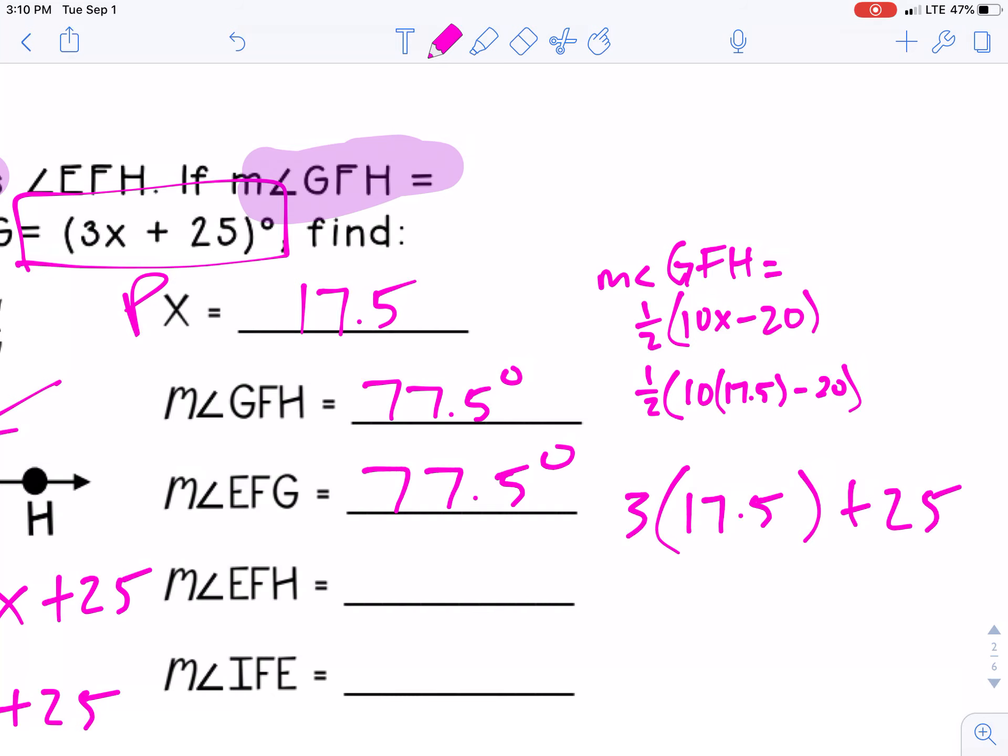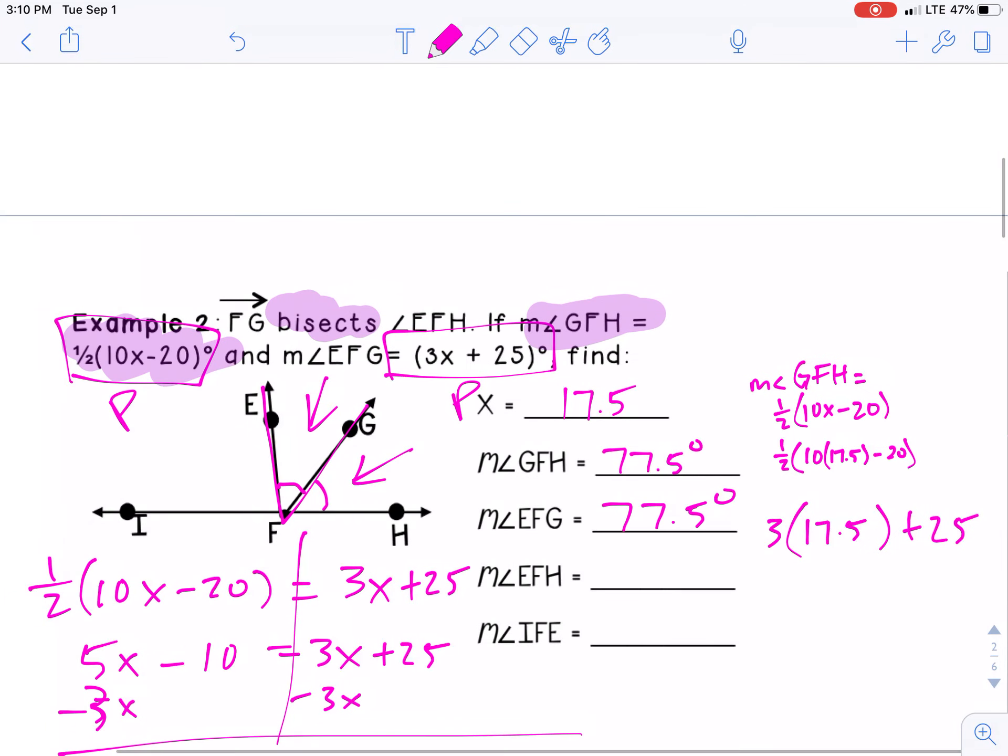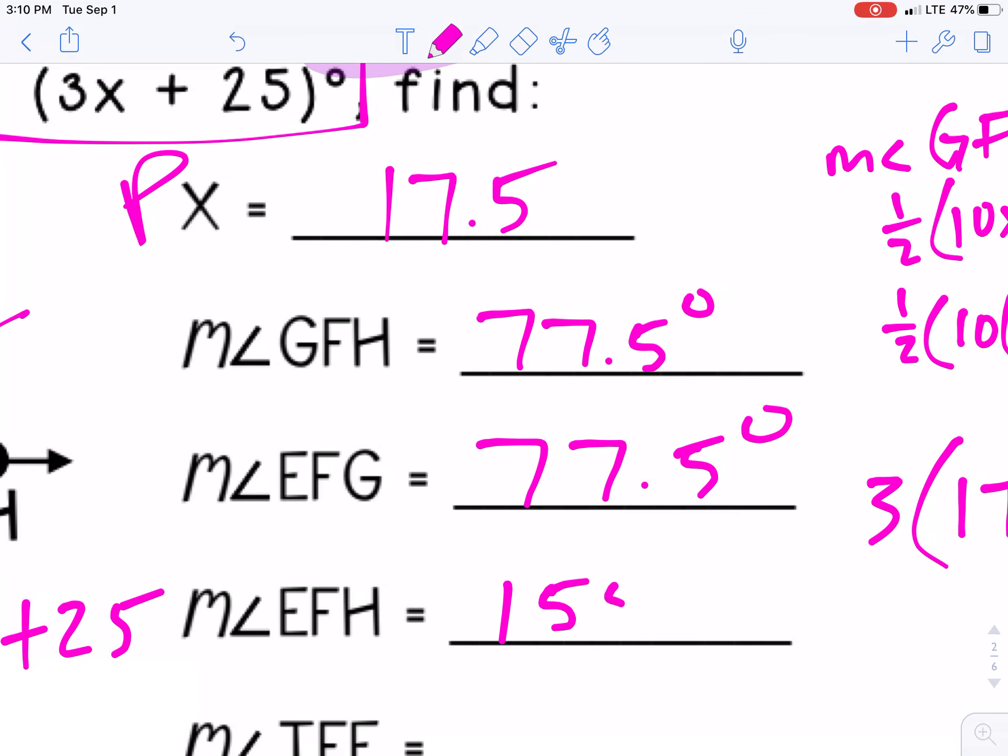Done ski. And then now EFH is the whole. Add those two values together and you get 155 degrees. Again, it's just these two values added together.